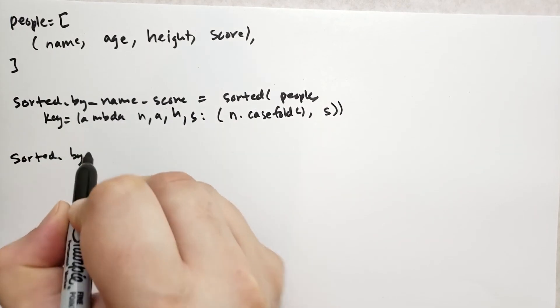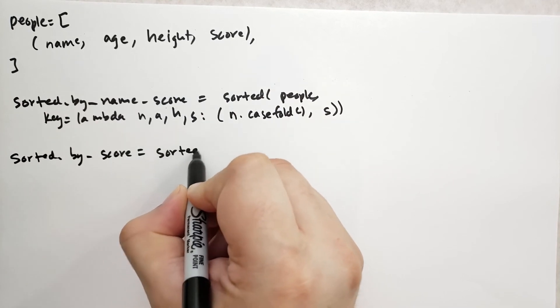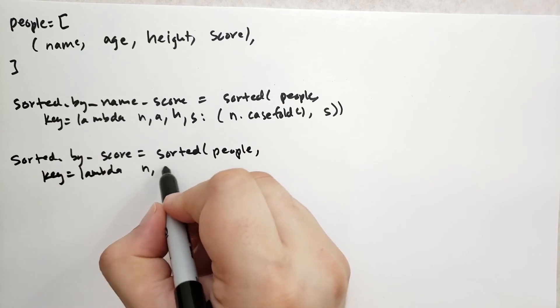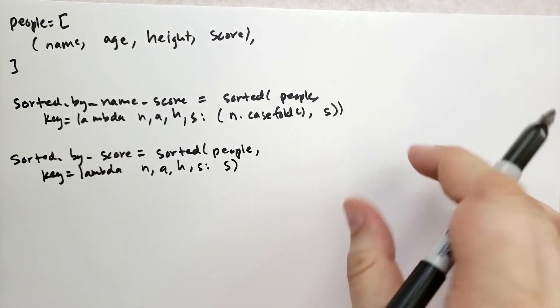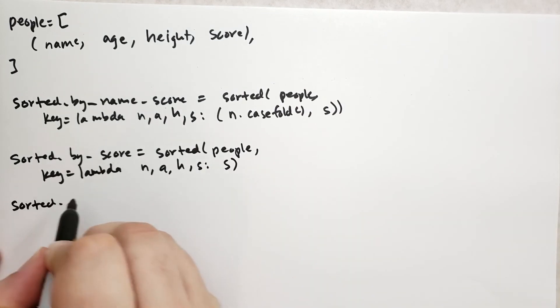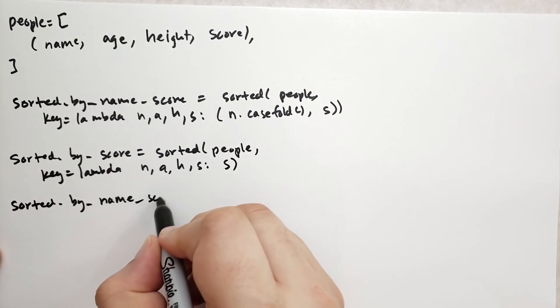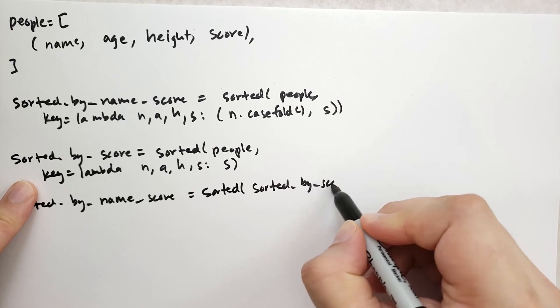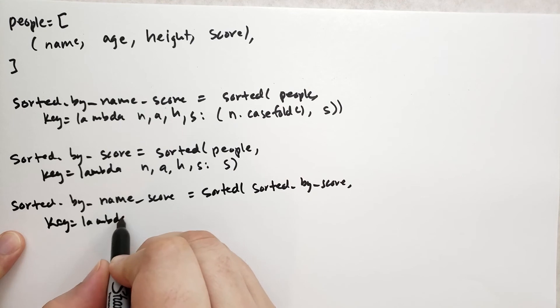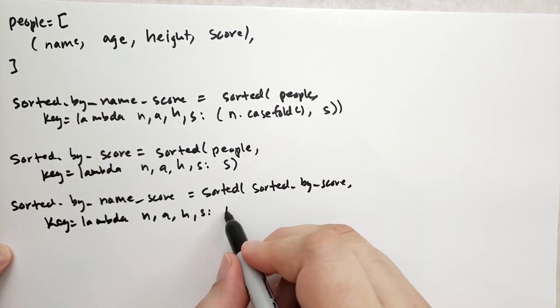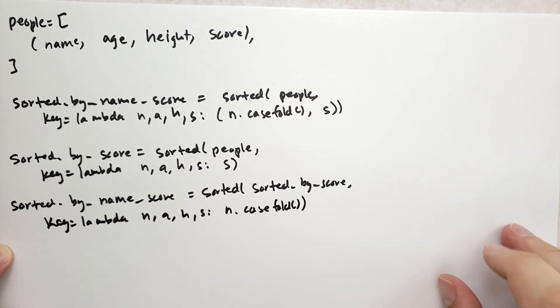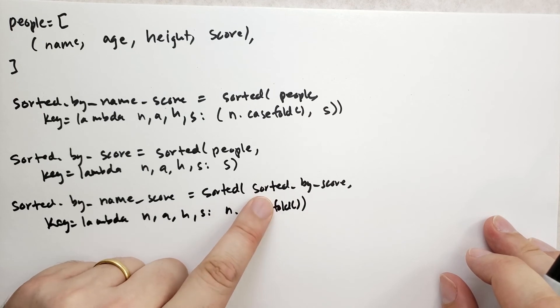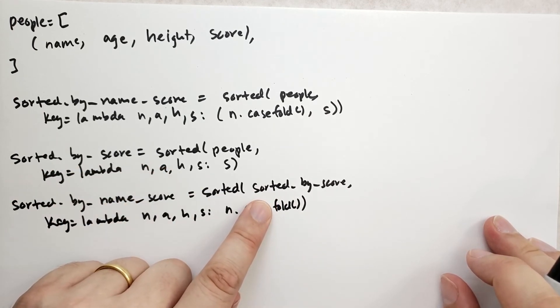We could also do this taking advantage of stable sort by saying sorted by score equals sorted with those people again, and this time the key function is going to be lambda name, age, height, score, and we're just going to return their score. So this is everybody sorted by their score. And then next we're going to say sorted by name and score equals sorted and we take the sorted by score with the key being a lambda returning their name but case folded. What this will do is it'll sort them by name but preserve the ordering. So if two people have the same name, it'll choose the people that appear first in this list. In this case, we've already sorted by their score, so the people who should appear first with the same name are those with the higher scores.